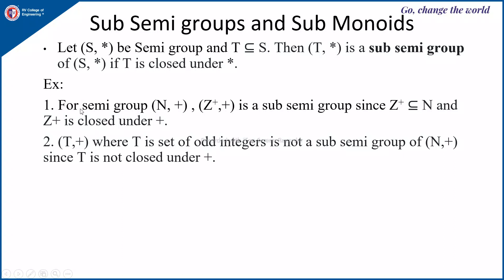For example, for the semigroup (N, +), if you take Z+ (positive integers), then (Z+, +) is a sub-semigroup since Z+ is a subset of N and Z+ is closed under addition. However, (T, +) where T is the set of odd integers is not a sub-semigroup of (N, +), since T is a subset of N but T is not closed under addition — adding two odd integers gives an even integer, not an odd integer.